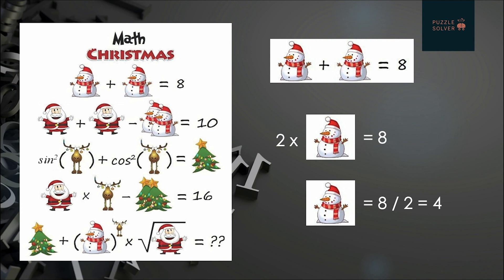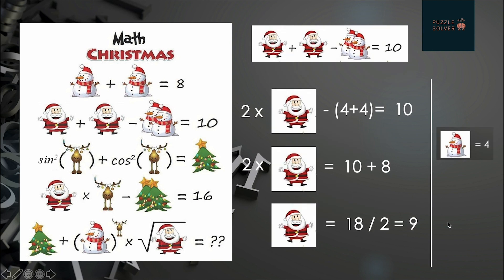In the first equation we have two snowmen whose sum is equal to eight. Solving this equation: 2 × snowman = 8, so one snowman value will be equal to 8 ÷ 2 = 4. By the end of our first equation, one snowman is equal to four.